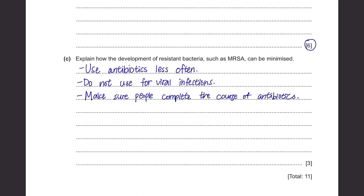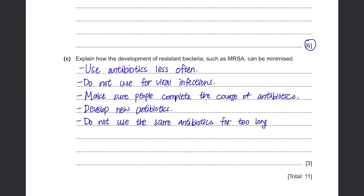Furthermore, we need to continue to develop new antibiotics because one day the bacteria are going to gain resistance and we need to keep making new antibiotics to kill off the mutated bacteria. Lastly, a person should not use the same antibiotics for a long time — it's not going to be effective because the bacteria inside your body would have already gained some resistance against it. So use different types and combinations of antibiotics. You can also include that everyone should have good hygiene to prevent the spread of infection, so that if someone carries resistant bacteria, if the infection is not spread, other people will not get the resistant bacteria.